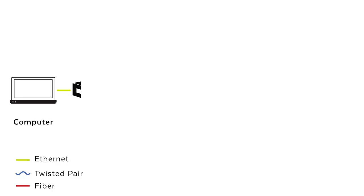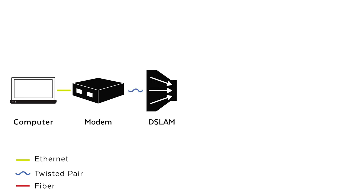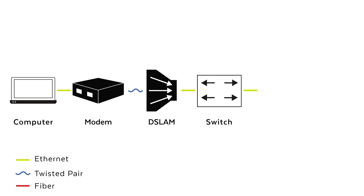A DSLAM, or Digital Subscriber Line Access Multiplexer, is a network distribution device that aggregates individual subscriber lines into a high-capacity uplink. These high-capacity uplinks connect subscribers to their Internet Service Providers, or ISPs.